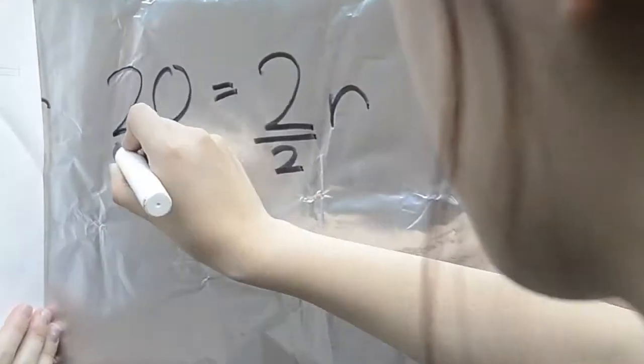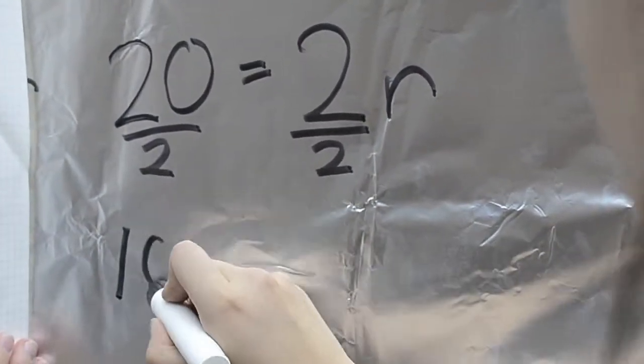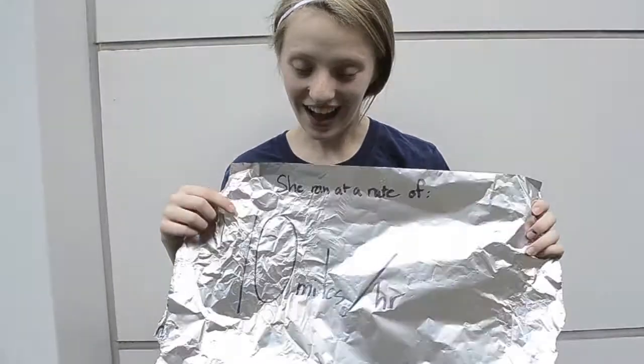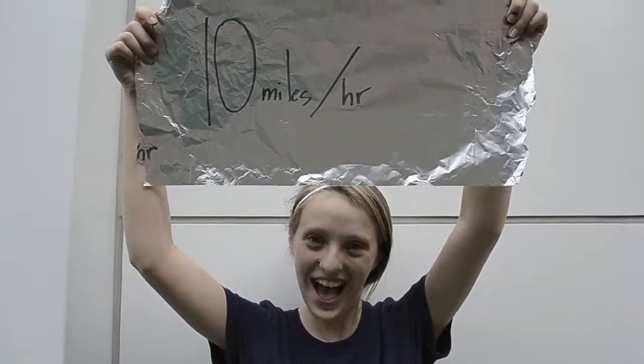To solve this, we divide 2 on both sides, and we get r equals 10. I ran at a rate of 10 miles per hour!